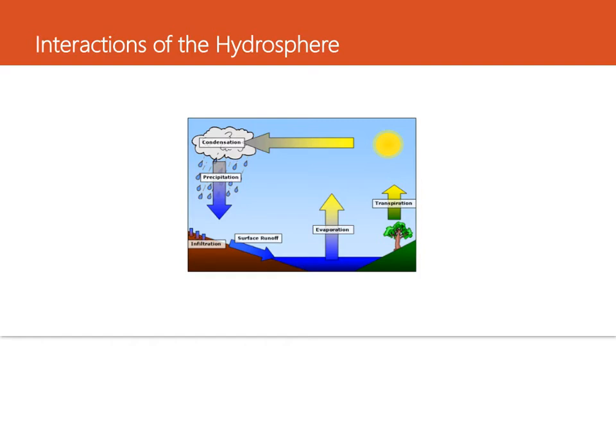So some of the processes in the hydrosphere include the evaporation and the precipitation of surface water, and also the infiltration or seeping of surface water into the ground to make groundwater. So these processes are all part of the water cycle, which involves the hydrosphere, right, water, but can also involve the geosphere, the atmosphere, and the biosphere.